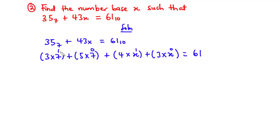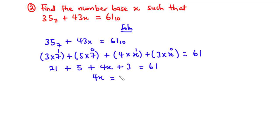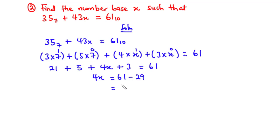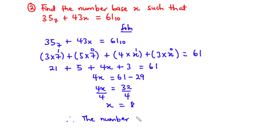Simplifying: 7 to the power 1 is 7, so 3 times 7 is 21. 7 to the power 0 is 1, so 5 times 1 is 5. 4 times x is 4x. x to the power 0 is 1, times 3 is 3. This equals 61. Now 21 plus 3 is 24, plus 5 is 29. So 4x plus 29 equals 61. Transposing 29 gives 4x equals 32. Dividing by 4, x equals 8. Therefore the number base x is base 8.